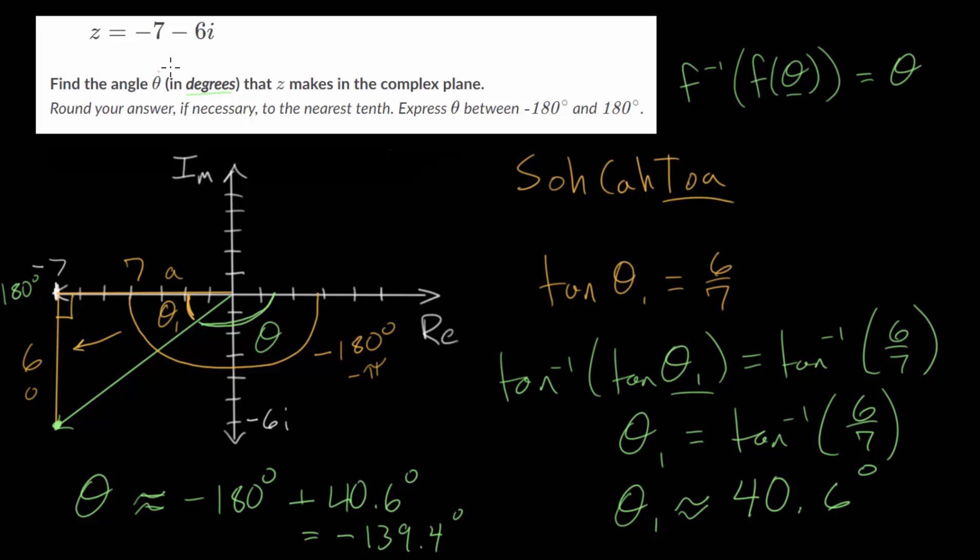So theta, the angle that this complex number makes in the complex plane, is approximately minus 139.4 degrees, which should make some intuitive sense. Because if it was at minus 90, that would bring us to the negative imaginary axis.